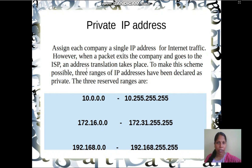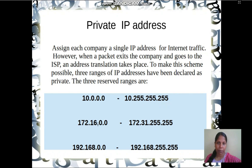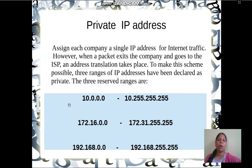In Network Address Translation, companies, organizations, and educational institutions may use a private IP address range. This private IP address range falls into three classes. In Class A we have 10.0.0.0 to 10.255.255.255. In Class B we have 172.16.0.0 to 172.31.255.255. In Class C we have a private IP address range starting from 192.168.0.0 to 192.168.255.255.